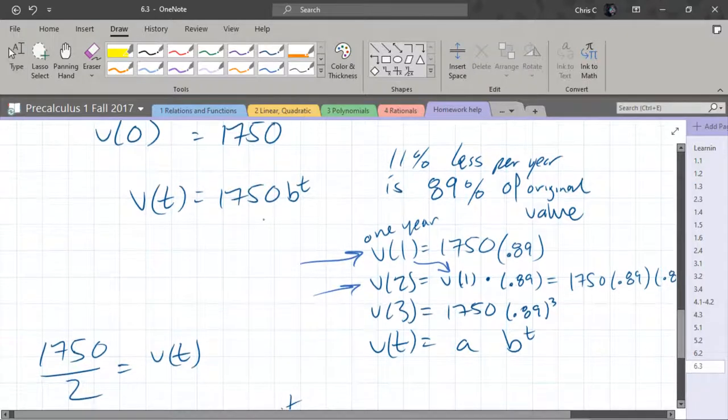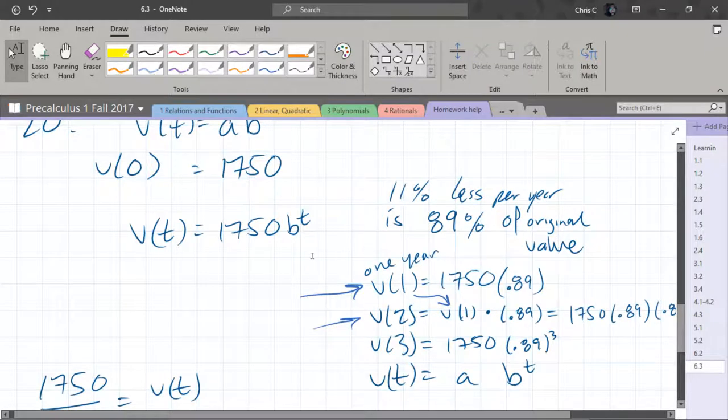And just from this pattern, that means our B, our base is that 0.89 and our initial value, just looking at what this form looks like, this initial value is right here and that will be A. So that'll get you A and B, the initial value, and then that would be the retained value each year.